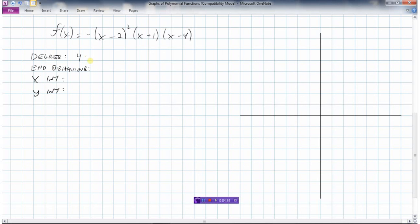Now what's the end behavior going to do? We need to look at that leading coefficient. That leading coefficient is going to be negative because the x to the 4 would need to be multiplied by the minus 1 that's out here. So the end behavior is that it's going to go down to the right.